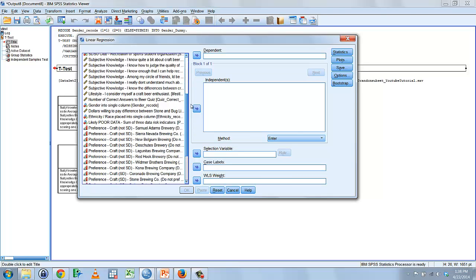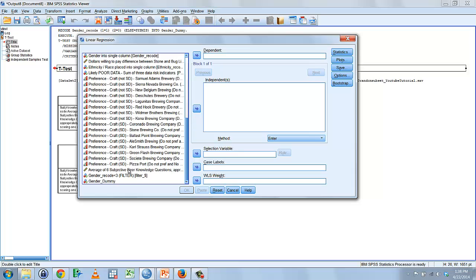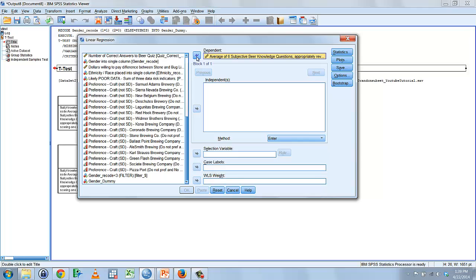Here's our pane. We're only going to need to worry about the dependent area and the independent area. In this case, we're trying to predict subjective knowledge. So that's our dependent variable. Our independent variable will be our new gender dummy variable. Now, because it's coded using a 1 and 0 scheme, or most importantly, there's only two possible categories for this nominal variable, males or females, we can drop it right into our independent variable section here.